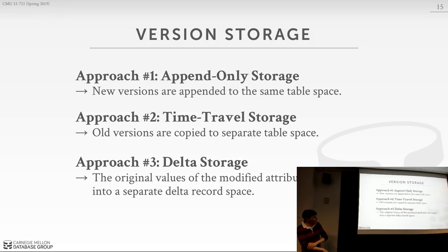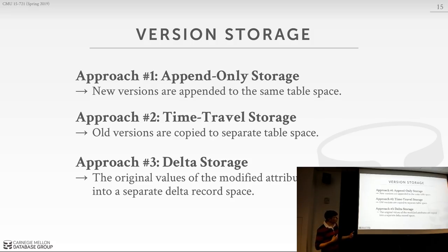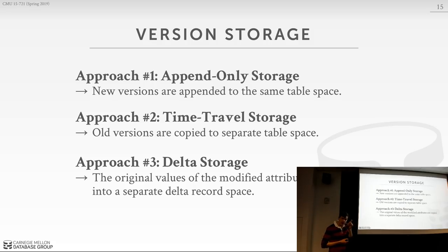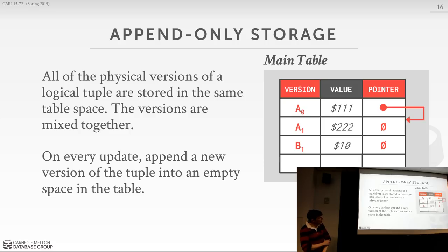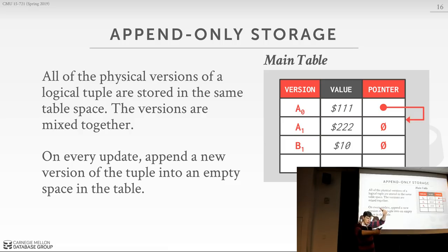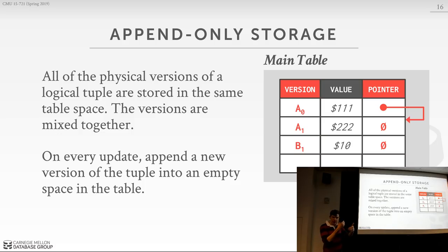There are three version storage schemes. The first is append-only storage: the easiest way to implement multi-version concurrency control. We have a single table space and all different versions intermixed. Every time we do an update, we make a copy of the tuple to a new tuple slot inside our table and apply the change there. For example, to update A1, we make a new copy A2 with the new value and update the pointer chain. In this 'oldest to newest' arrangement, the head is the oldest version, so to get to A2 you have to follow pointers from A0 to A1 to A2.